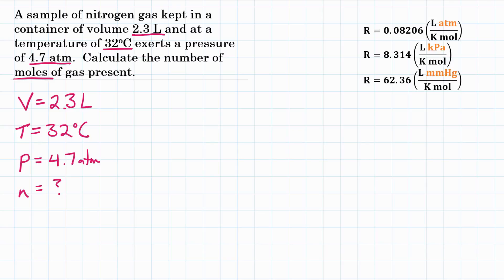So what kind of problem is this? This is an ideal gas law problem because the ideal gas law, otherwise known as Pivner, is PV equals nRT.